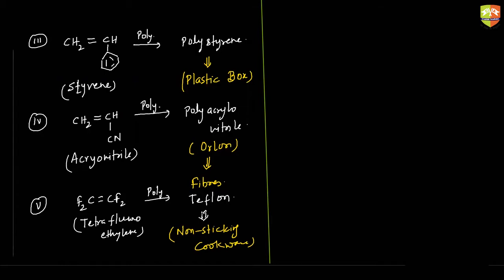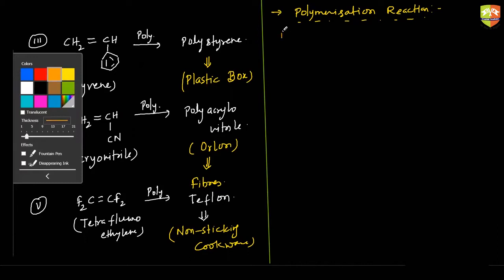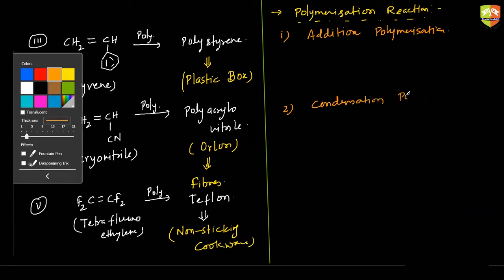Two types of polymerization reactions we have. The first one is addition polymerization, and the second one is condensation polymerization. Under addition polymerization, we also have three types. The first one is free radical polymerization, the second one is cationic polymerization, and the third one is anionic polymerization.